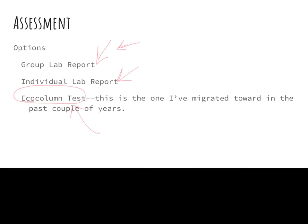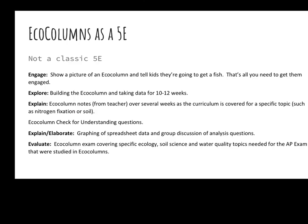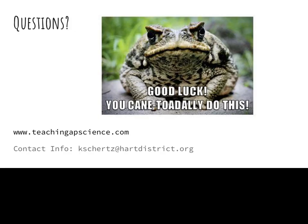Some other assessment ideas include presentations and having kids make videos. There's something called Flipgrid where they can make small videos every week when they take data and then compile them. Eco-columns is not a classic 5E, but if you needed to put the different sections into the 5E format, you can — it's just not a traditional 5E with a lot of inquiry in the explore section. A lot of the resources I've mentioned are at teachingapscience.com.